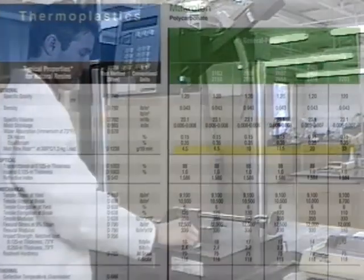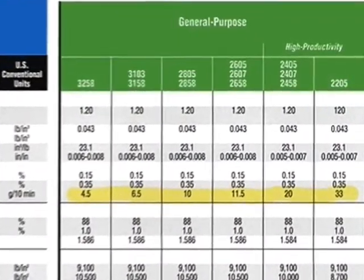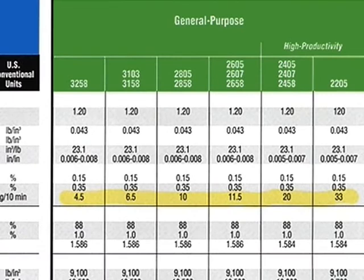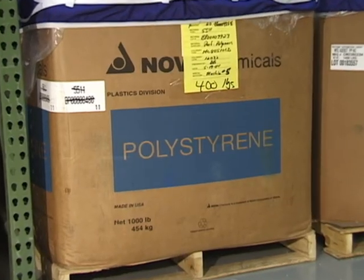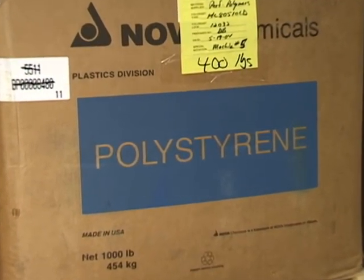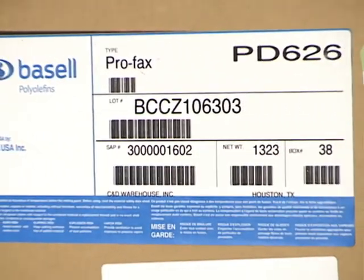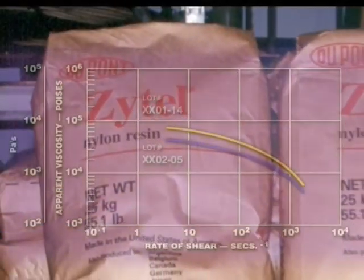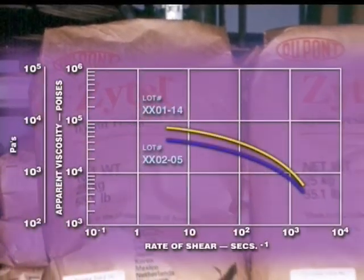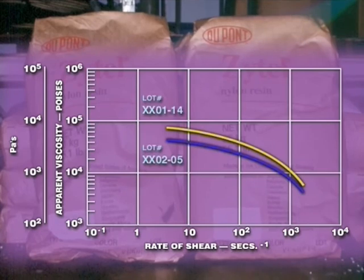Polymers are often available in different grades, and each grade has particular flow characteristics. The viscosity of the polymer can be used to compare the flow characteristics of different polymers or different grades of the same polymer. The viscosity data can also be used to qualify new materials by comparing a newer lot of material to a previously used material.